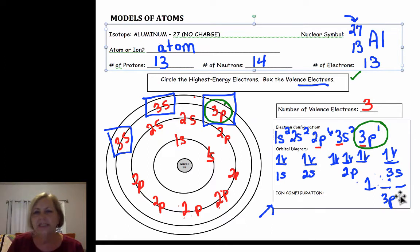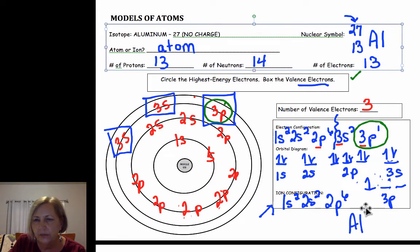The question says to write the ion configuration. Aluminum is a metal. Metals are losers, so it's going to lose electrons until it becomes that previous noble gas. So it's 1s2 2s2 2p6 and it becomes the aluminum ion, and we don't change the name of cations for metals.